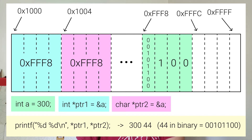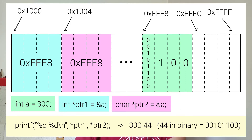We can have another pointer, this time a char pointer, pointer2, and also point it to a. Now you might be wondering why we have different types for pointers if they take up the same amount of space. The reason is that by telling C what type our pointer points to, C knows how many bytes to read when we dereference our pointer. So if we print out the value of pointer1 and pointer2, we get 300 for pointer1 but 44 for pointer2, because a char only takes up one byte so C only reads the first byte, which is 44.